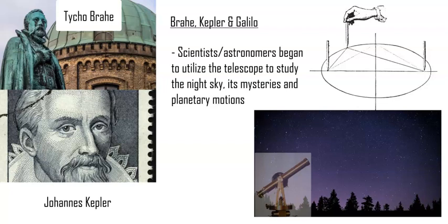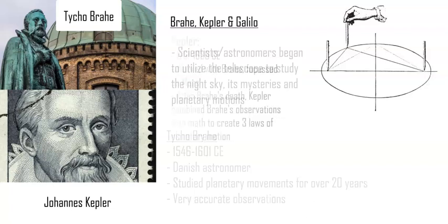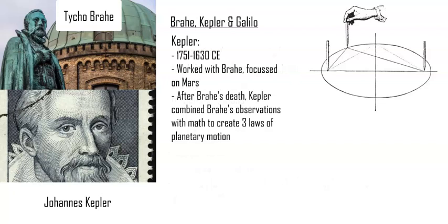All this new work was being done and published, and Brahe was an astronomer-scientist in Denmark with his own observatory. He observed the motion of planets for about 20 years — a great, massive amount of detail and accuracy went into his work. He then hired Kepler, a young German who came up and worked with Brahe on Mars data, and Kepler then formulated his three laws of planetary motion.